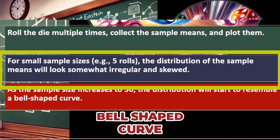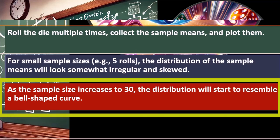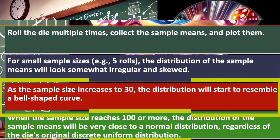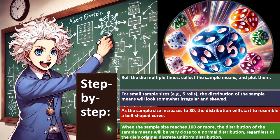The general rule is around 30, but it depends on how skewed the data is. If you had a dataset that's already normally distributed — say a machine producing a consistent number of ounces of ketchup — you might not need as high an n to get a bell-shaped curve. But if something is highly skewed, you'd need larger sample sizes. When the sample size reaches 100 or more, the distribution of sample means will be very close to the normal distribution, regardless of the dice's original discrete uniform distribution.